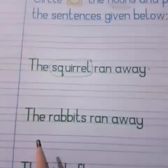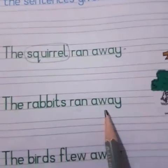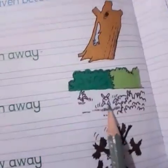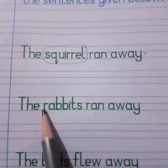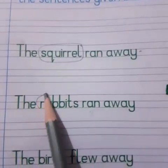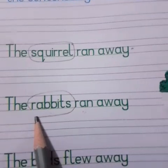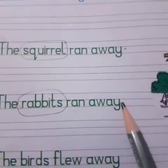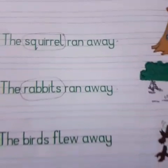The next sentence is: 'The rabbits ran away.' Here is another animal. Circle the noun — rabbit — and put a full stop at the end.